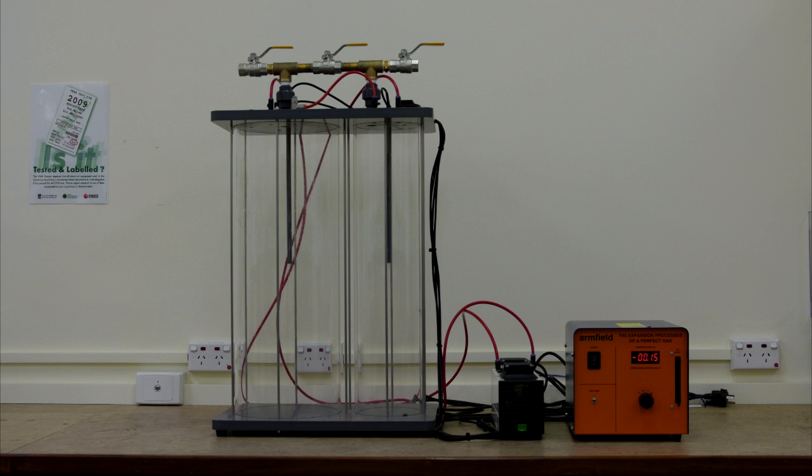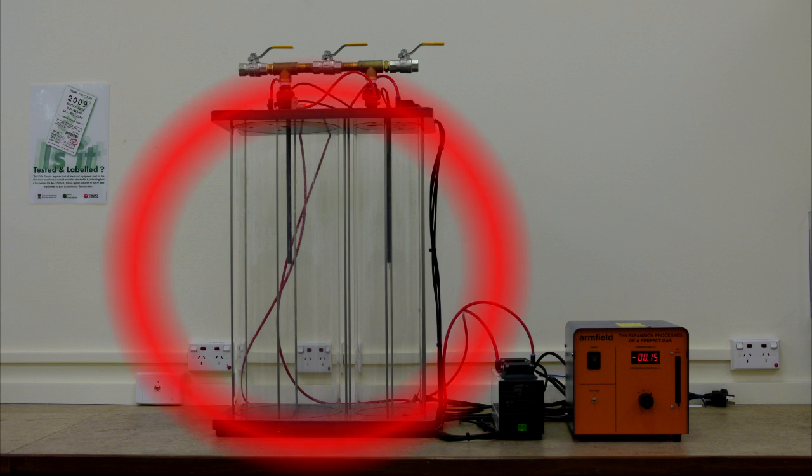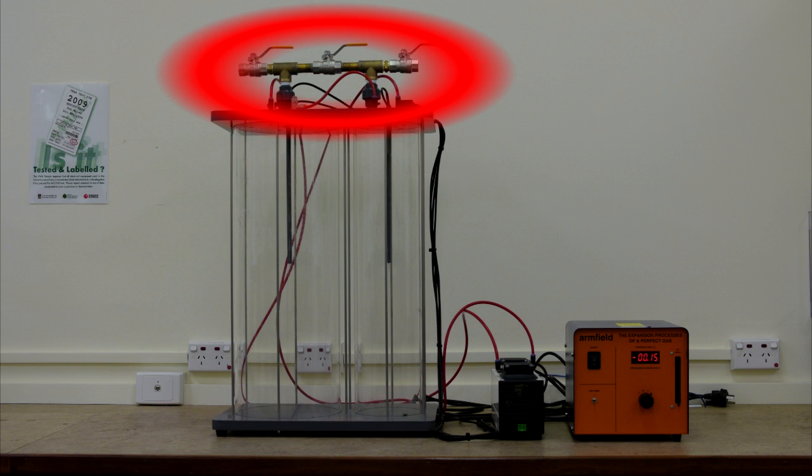The equipment for this lab consists of a control box, air pump, 2 cylinders, and a number of valves which connect the cylinders to the pump and to the environment.